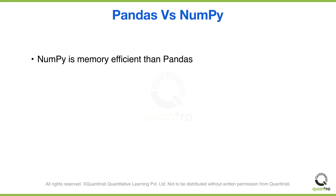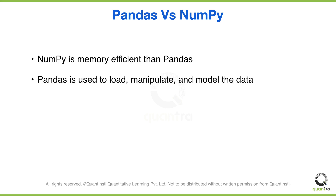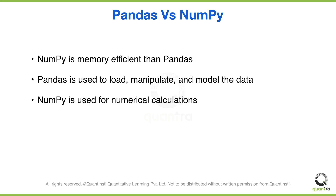Now, why do we use pandas? As discussed earlier, when we are working with tabular data we use pandas, because we have specific methods in pandas to load data, manipulate data, and model the data. But when you are doing numerical calculations on the data, you can use NumPy. In this way you can efficiently use both together.